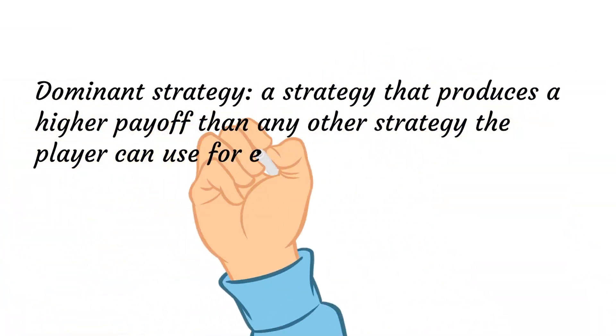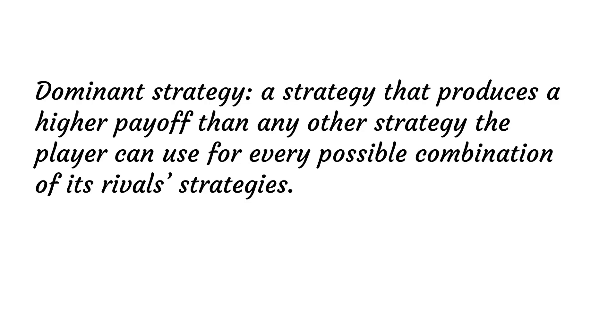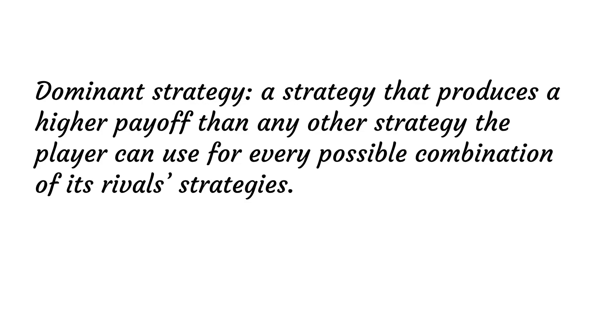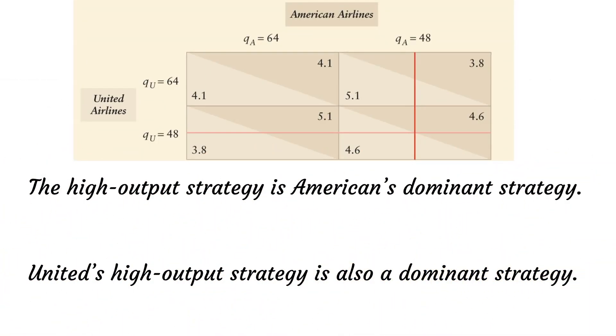A dominant strategy produces a higher payoff than any other strategy the player can use for every possible combination of its rivals. For example, in this prisoner's dilemma game, the high output strategy is American Airlines' dominant strategy. Whichever strategy the United Airlines uses, American's profit is higher if it uses its high output strategy. By the same reasoning, United Airlines' high output strategy is a dominant strategy. For both firms, we can predict that the outcome of this game is the pair of high output strategies.